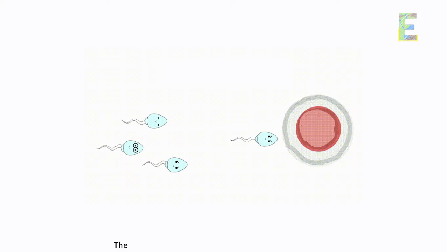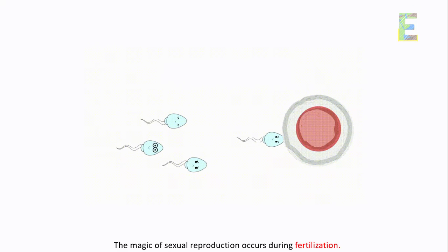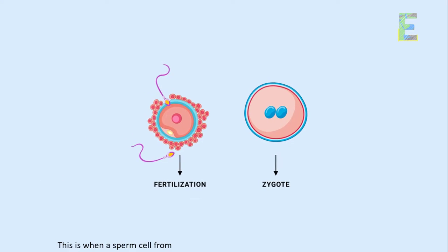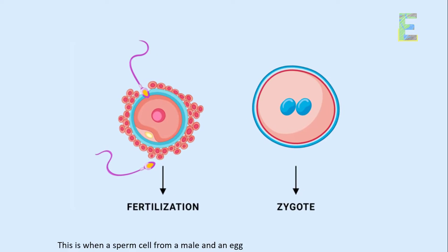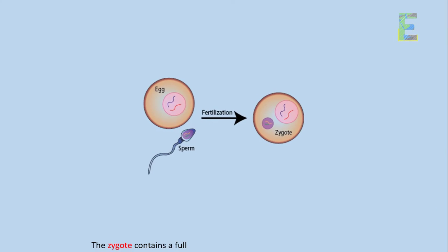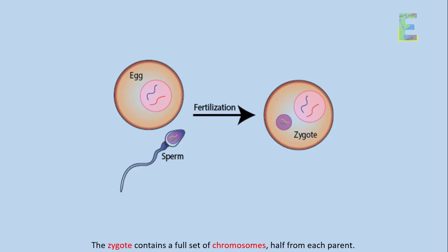Fertilization — the magic of sexual reproduction occurs during fertilization. This is when a sperm cell from a male and an egg cell from a female unite to form a zygote. The zygote contains a full set of chromosomes, half from each parent.